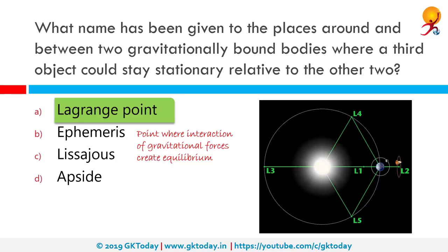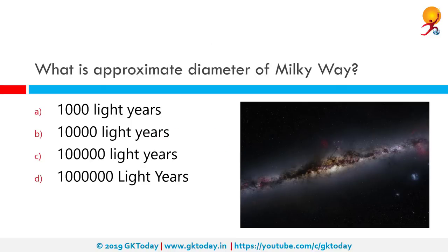In these orbits, a satellite requires very little energy to maintain its orbit and will not be eclipsed from the Sun. What is the approximate diameter of the Milky Way? The Milky Way is a barred spiral galaxy, 1 million to 1.2 million light years in diameter, containing 200 to 400 million stars. The correct answer is 1 million light years.